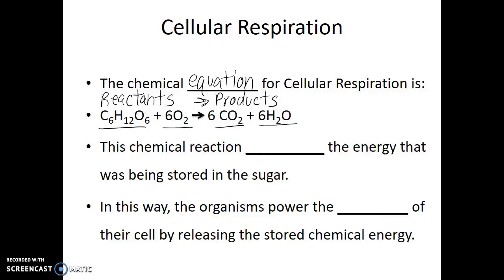You can see that for cellular respiration, the reactants were the products of photosynthesis, and the products of cellular respiration are the reactants for photosynthesis. These two metabolic pathways — photosynthesis and cellular respiration — are related to each other but somewhat opposite. In cellular respiration, this chemical reaction releases the energy that had been stored in the sugar, powering the activity of cells by releasing stored chemical energy.